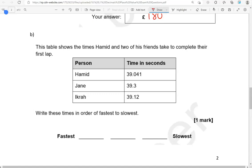Write these times in order of fastest to slowest. So fastest would be the smallest number in here, and slowest would be the biggest number. So we've got 39.041, 39.3, and 39.12. All three of them have 39 before the decimal point.